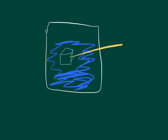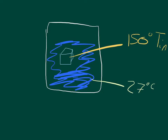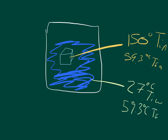So what this is saying is we've got an aluminum block at 150 degrees — that's the initial temperature of the aluminum block. We also have a body of water, we don't know how much, but it has an initial temperature of 27 degrees. These two are placed together and the aluminum has a final temperature of 59.3 degrees Celsius. Since the water is brought into thermal equilibrium, it also has a final temperature of 59.3 degrees Celsius. So how much water do we need for that to happen?